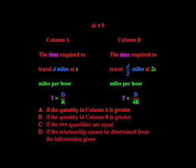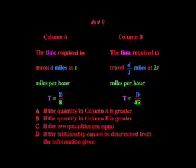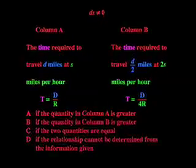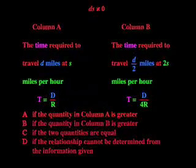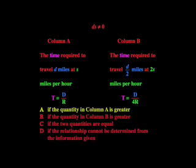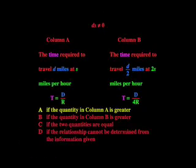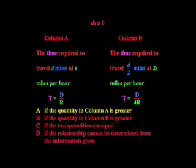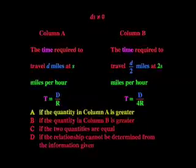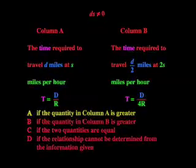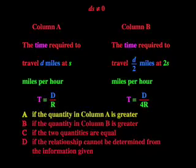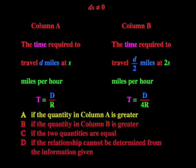This means column A gives us T equals D over R, and column B gives us T equals D over 4R. Can you see which is larger now? Since column B tells us we're going to be able to travel the same distance as column A, but doing it at four times the rate, it means it's going to take a lot more time to get there on column A, so the quantity in column A is greater.